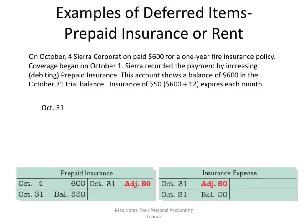On October 4th, Sierra Corporation paid $600 for a one-year fire insurance policy. That coverage began October 1st and is good for a whole year. So at the time, we would record debit prepaid insurance $600, credit cash $600. But by the end of October 31st, we've used up one month — $50. But nowhere in the records is that shown. That's the need for adjusting entries.